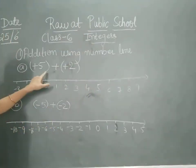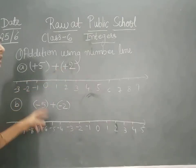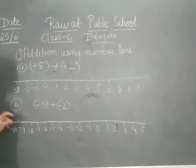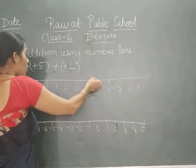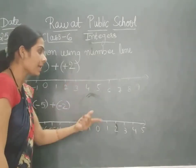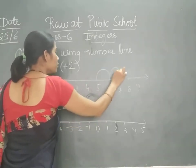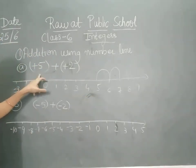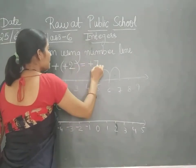Here I have given a question: plus 5 plus plus 2. Both integers are positive. There are two methods; first we will put the point on 5. Here it is plus 2, so we will move in the right direction by two digits — 1, 2. So where have we reached? We have reached 7. So plus 5 plus 2 will give plus 7.